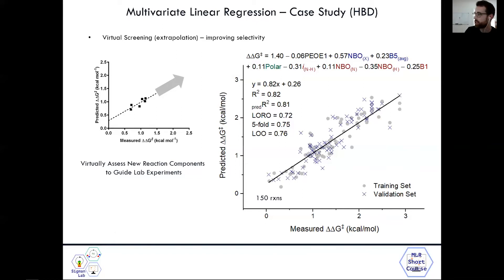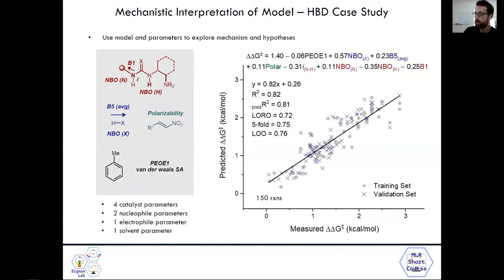Now we can think about how to use a model to gain some mechanistic insight into our reactions we're studying. Looking back at this optimal model, we have four catalyst parameters, two nucleophile parameters, one electrophile parameter, one solvent parameter. In this case study, it helped us to look at the proposed transition state, which is pretty universal for these types of reactions where you see the dual activation of the electrophile and nucleophile by the hydrogen bond donor catalyst.